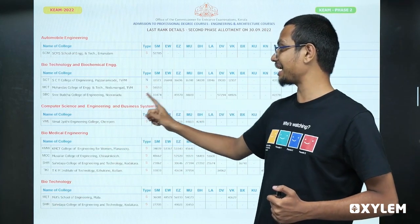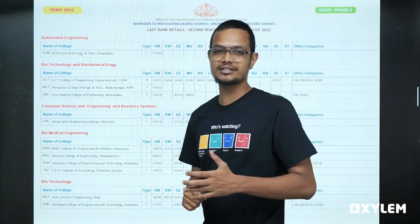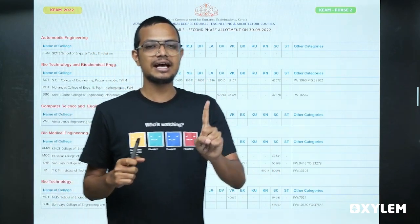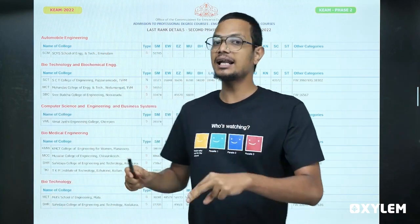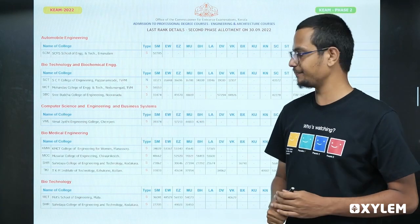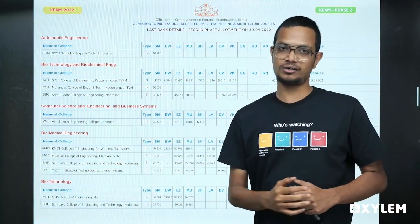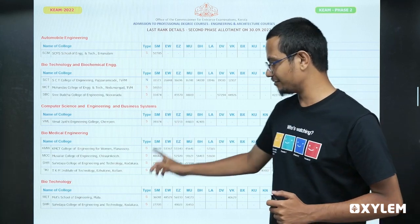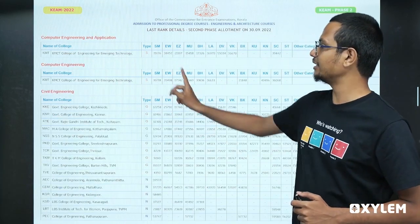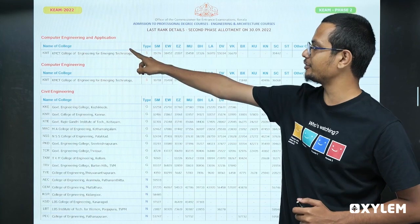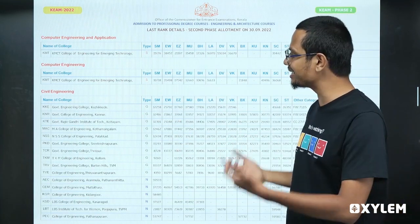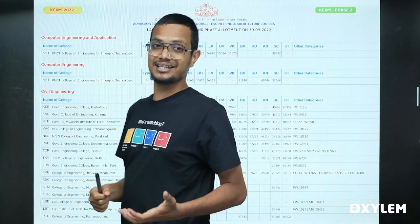If you look at Computer Science Engineering, there is basic Computer Science Engineering and a business systems variant. Biomedical and Biotechnology are self-financing. Computer Engineering and Application, and Computer Science Engineering — there are many types of courses under this category.